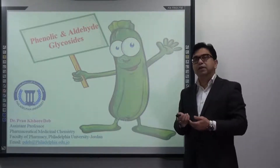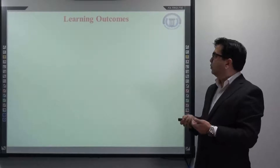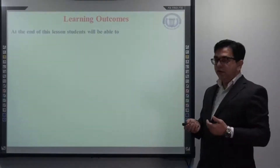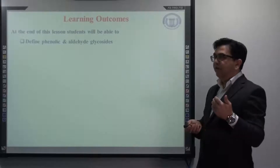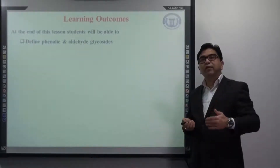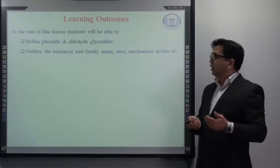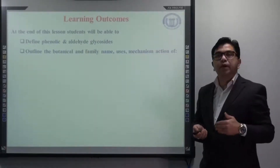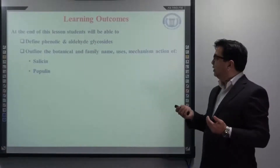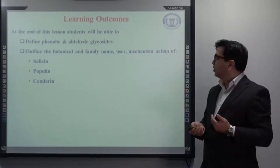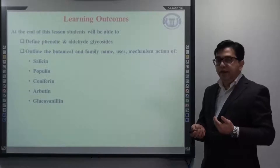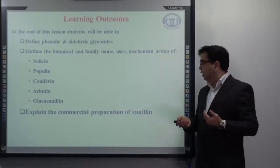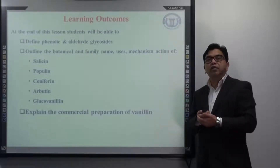Before I start with the lecture, I will go through the learning outcomes of this chapter. At the end of this lecture or lesson, you will be able to define phenolic, aldehyde, and alcoholic glycosides. You will also be able to outline the botanical name, family name, uses, and mechanisms of action of salicine, populine, coniferin, arbutin, and glucovanillin, and explain the commercial preparation of vanillin.